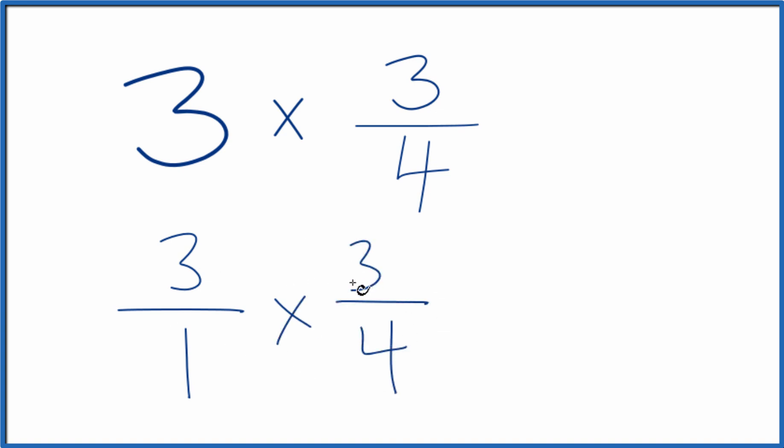When we're multiplying fractions, we multiply the numerators and the denominators. 3 times 3 is 9. And 1 times 4 is 4. 9 fourths. Same thing we got before.